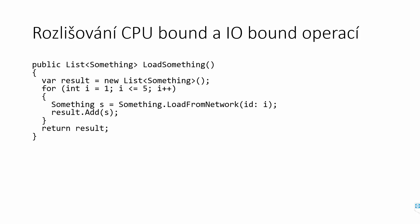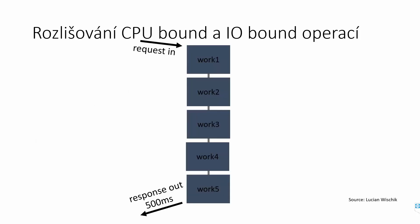Here is a simple code example: a method that loads something from the network. You have a loop — maybe by ID or a list of files to fetch from the internet. You call a load-from-network method, put the result into a list, and return it. You'll soon realize this is slow. If each request takes 100 milliseconds and you have five requests, the total time for this method is 500 milliseconds.